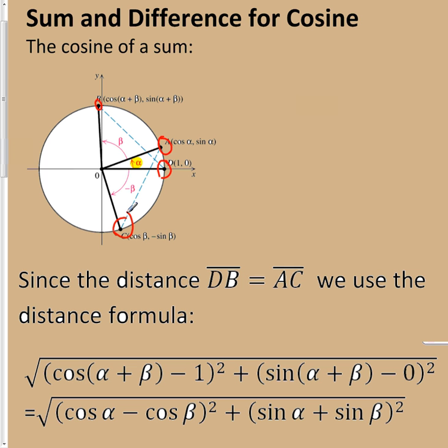If I'm on a unit circle, then my point, point C, will be the cosine of alpha plus beta, the sine of alpha plus beta. And then my other point will be the cosine of beta minus the sine of beta.